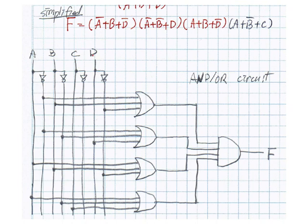From this expression we can draw the circuit: at the first stage we have OR gates — one OR gate for each sum term, giving four OR gates — and then the outputs of those OR gates are AND'd together. This is a circuit using AND and OR gates. But technology mapping requires designing with NOR gates only, so how do we do that?